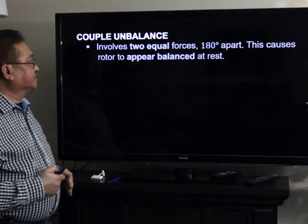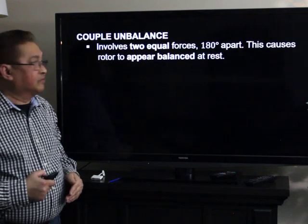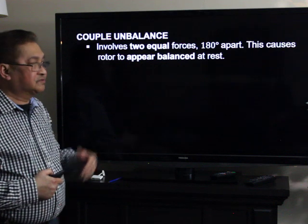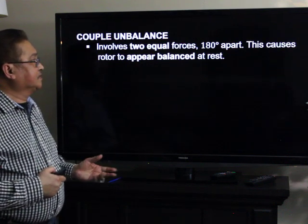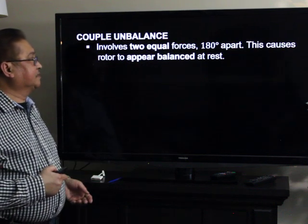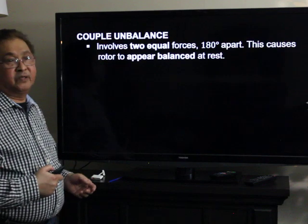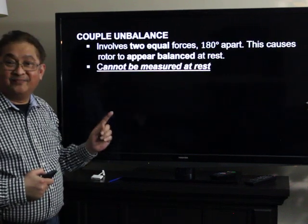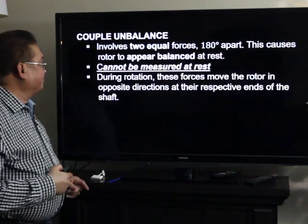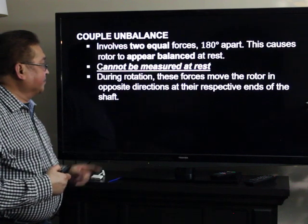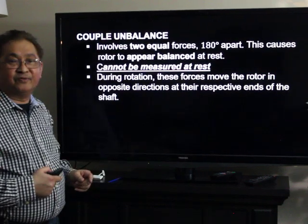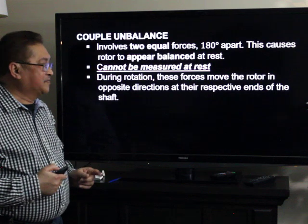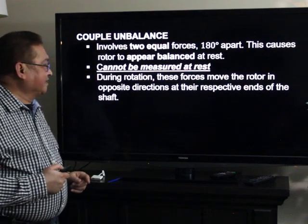Couple unbalance involves two equal forces 180 degrees apart — that is why it is called couple. This causes the rotor to appear balanced at rest; hence, it cannot be measured at rest. During rotation, the forces move the rotor in opposite directions at the respective ends of the shaft.